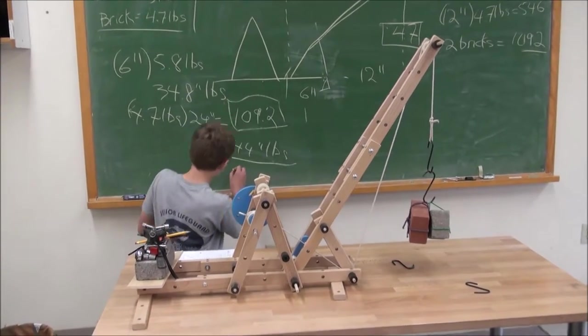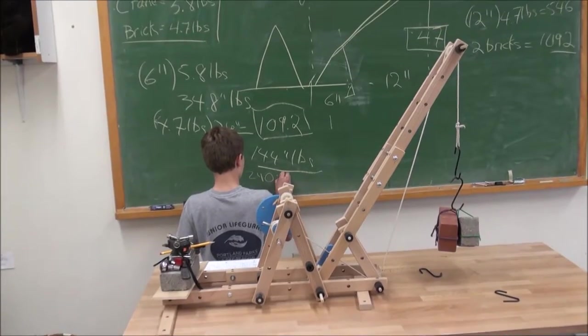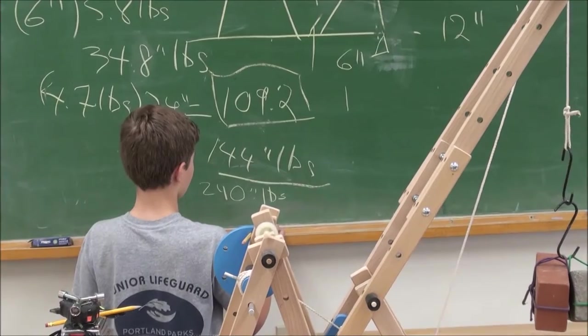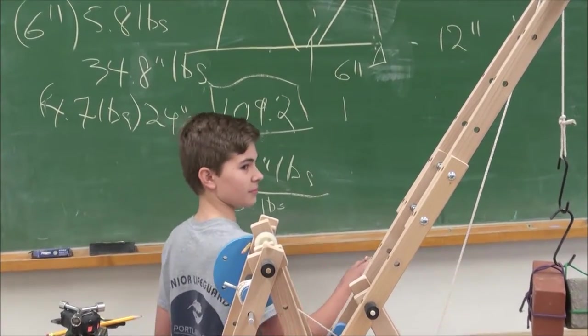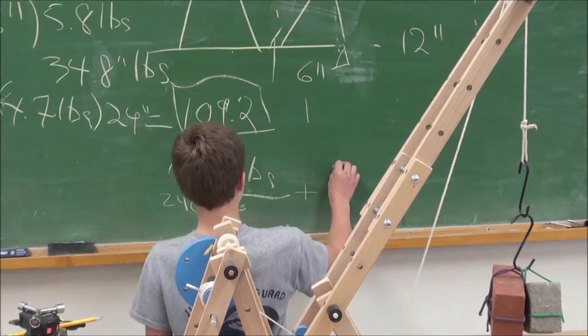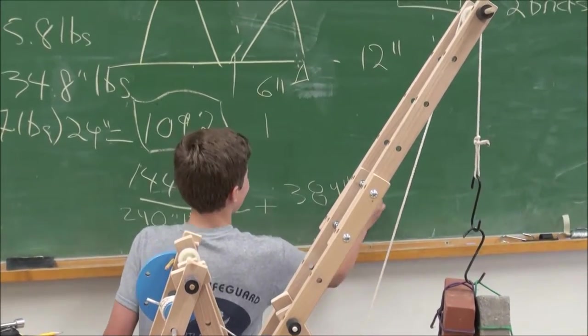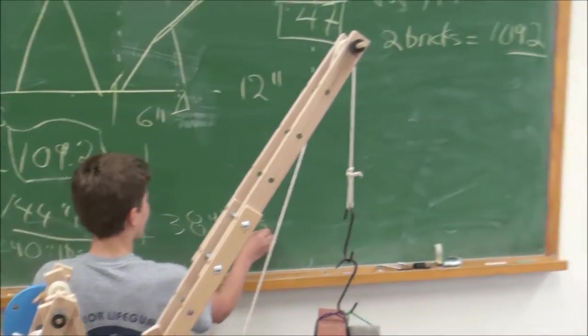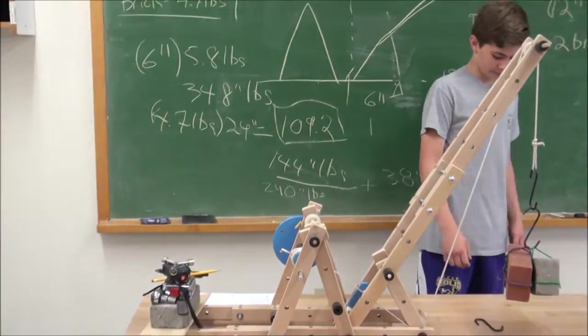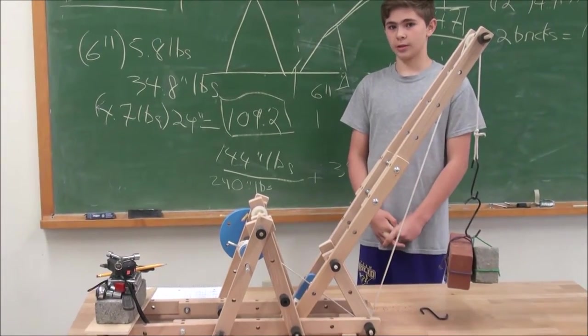Underneath the 144, write 240 inch pounds. What's the total? 384 inch pounds. Which is a lot more than the 109. Now, I was guessing all that stuff weighed 10 pounds. That was a guess. But we got a good safety factor, a margin of safety?